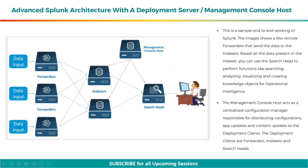Let's now see how all components stack up against each other to make an architecture. This is a sample end-to-end working of Splunk. The images show a few remote forwarders that send the data to the indexers. Based on the data present in the indexer, you can use the search head to perform functions like searching, analyzing, visualizing and creating knowledge objects for operational intelligence. The management console host acts as a centralized configuration manager, responsible for distributing configurations, app updates, and content updates to the deployment clients. The deployment clients are forwarders, indexers, and search heads.